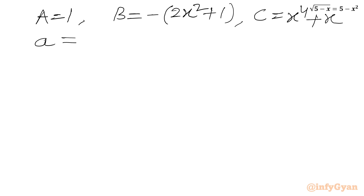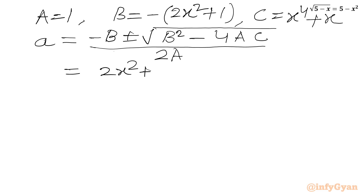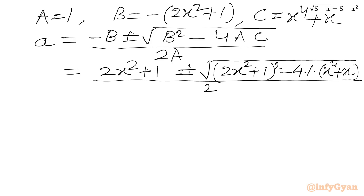Now we can use the quadratic formula: A equals minus B plus or minus square root of B² minus 4AC, all over 2A. So A equals 2x² plus 1, plus or minus the square root of (2x² plus 1)² minus 4 times (x⁴ plus x), all divided by 2.